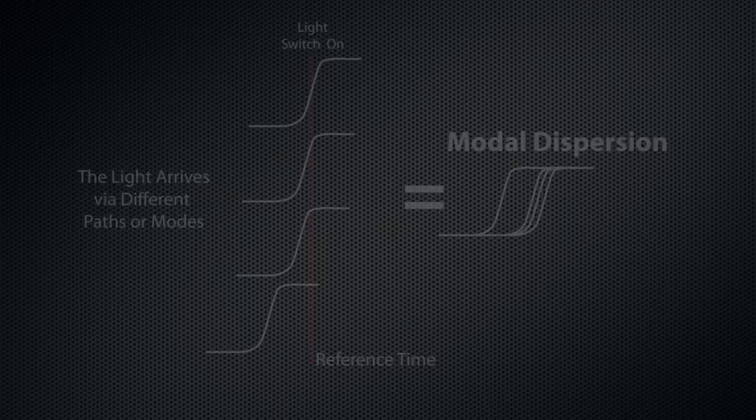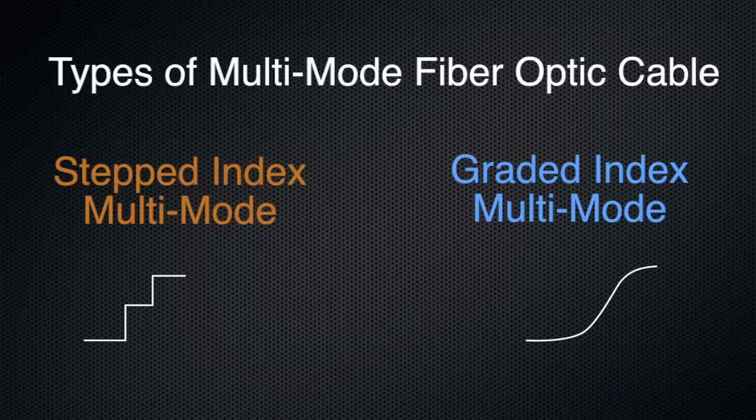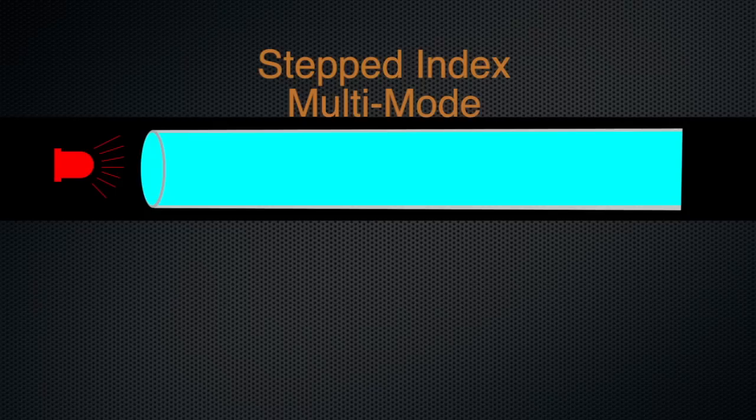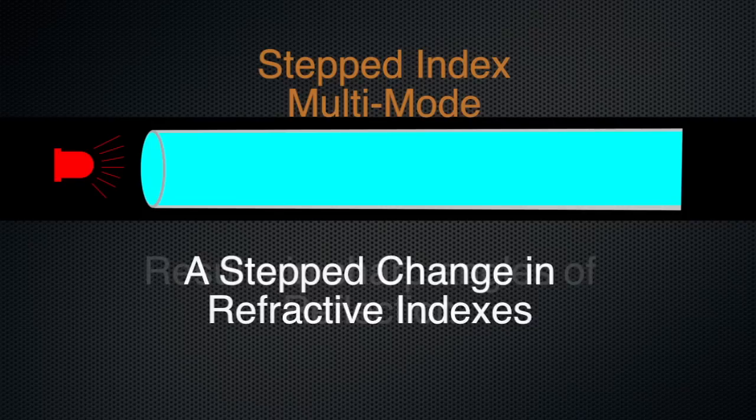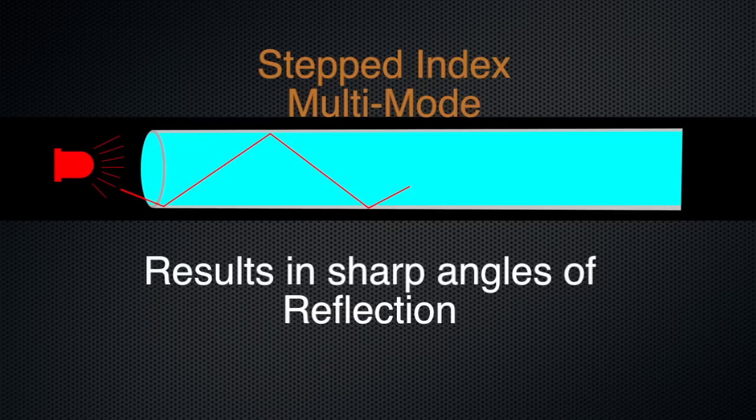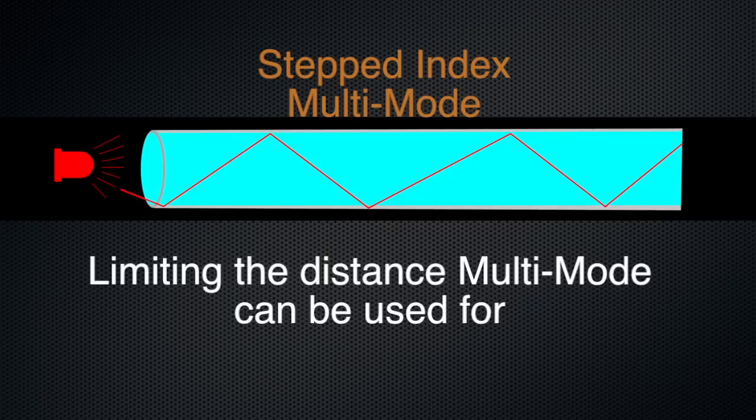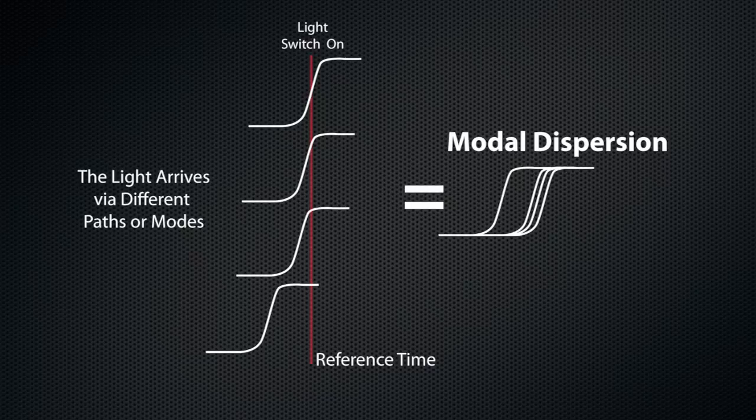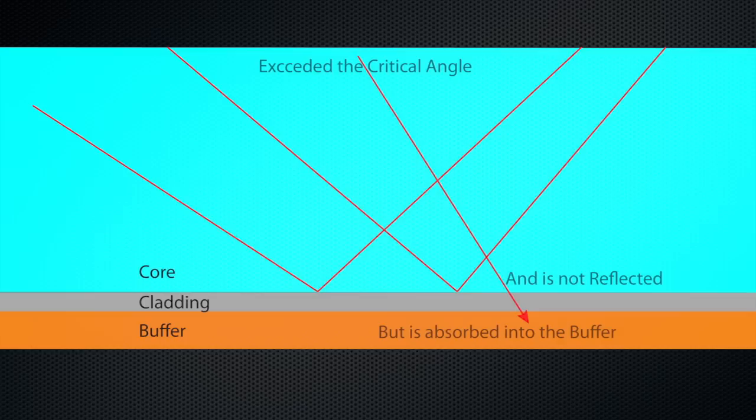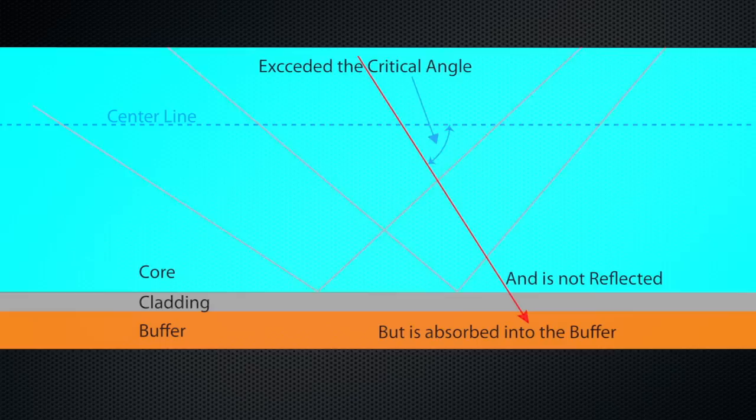Multi-mode fiber optic cable can either be stepped index or graded index. This refers to the way in which the light interacts with the fiber and the cladding. In stepped index multi-mode fiber optic cable, the difference between the refractive indexes of the cladding and the core occurs as a sharp change or step, hence the name stepped index. The sharp step causes the light rays to reflect at the boundary uniformly. This consistent sharp transition leads to increased modal dispersion. It also leads to light loss, as some light rays are reflected at sharper angles and are absorbed into the buffer. Because of the attenuation and increased modal dispersion, stepped index multi-mode optical fiber is only used for short runs, such as within a room or a building.